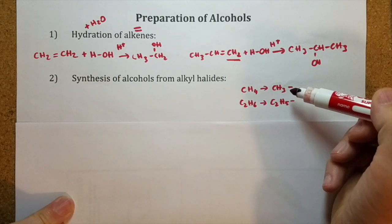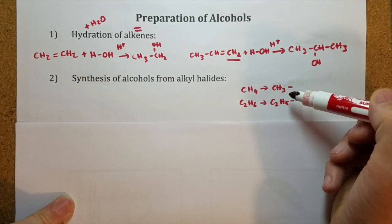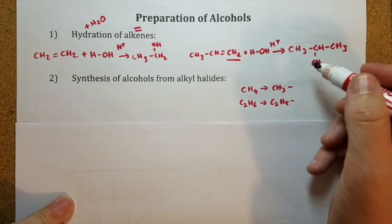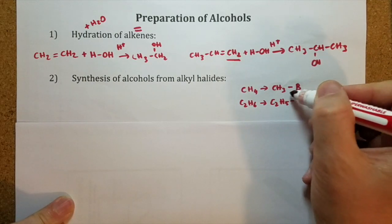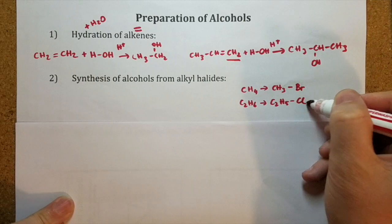If you add a halogen to these alkyl groups, you are going to get an alkyl halide. This is methyl bromide. This is ethyl chloride.